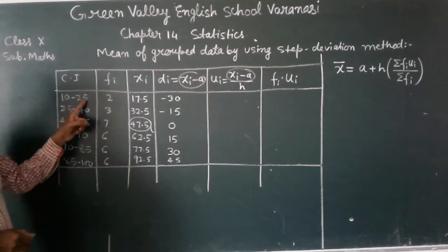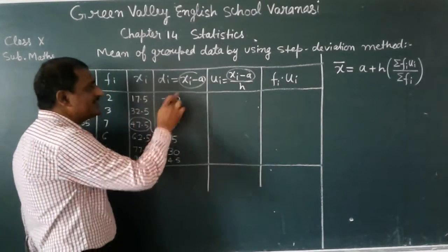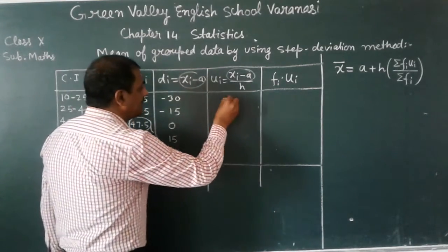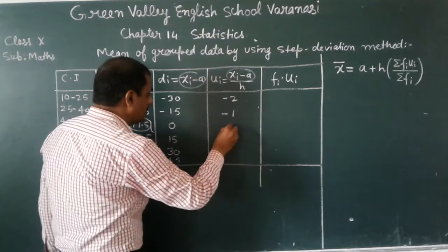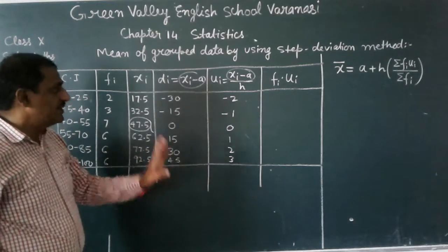So it will become xi minus A upon 15, it will become minus 2, minus 1, 0, 1, 2, 3. 45 divided by 15, it will become 3.